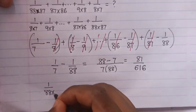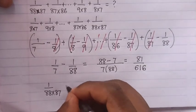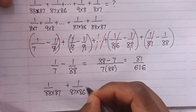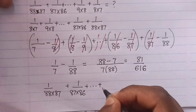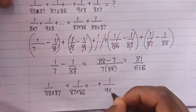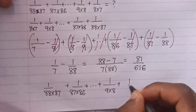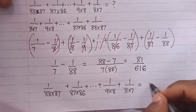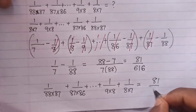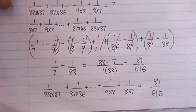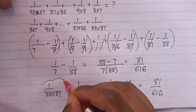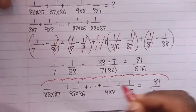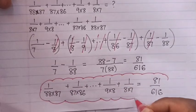The simplified answer for this 1 over 88 times 87, plus 1 over 87 times 86, plus dot dot dot, plus the series 9 times 8, plus 1 over 8 times 7, is equals to 81 over 616. This is the simplified answer. If you like the video, please like and subscribe.